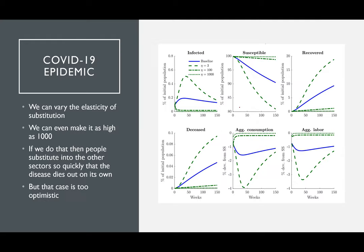One more thing they tried was varying the elasticity of substitution eta, making it as high as 1000. If eta is that high, people substitute into other sectors very quickly, and that causes the disease to die out on its own. This is why with very high values of eta — 100 or 1000 — the infected population, consumption, and all factors recover almost immediately. But the problem is that this is too optimistic, since we know people won't always be able to adjust their consumption due to other constraining factors.